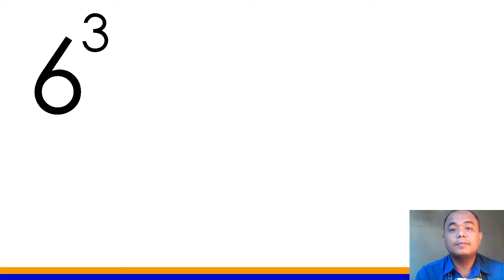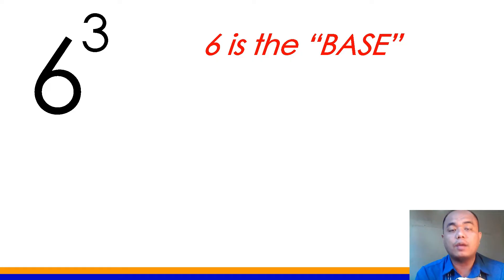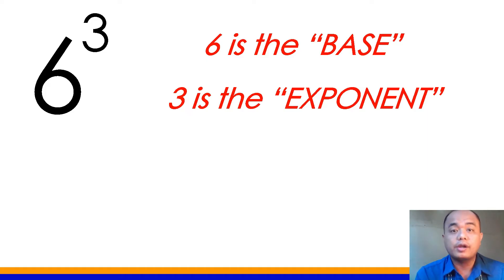Let's have another example. How do we read this? That is read as 6 cubed. And what is our base here? The base here is 6. And our exponent is 3. What does 6 cubed mean? 6 cubed means that number 6 is used as factor 3 times, or 6 as our base is multiplied 3 times as indicated by our exponent 3.